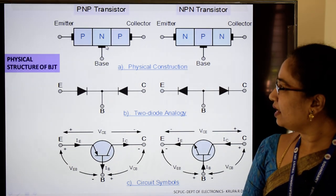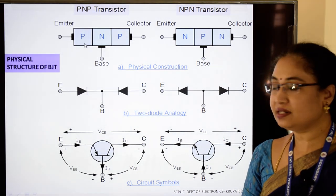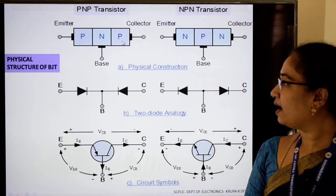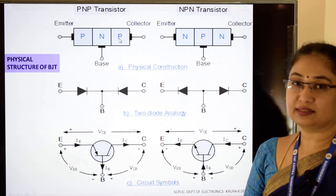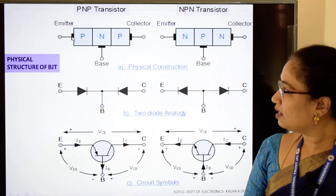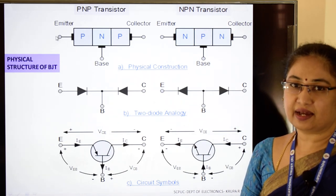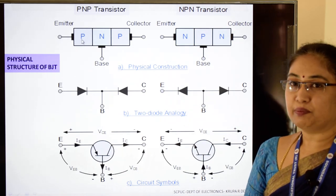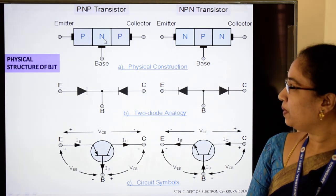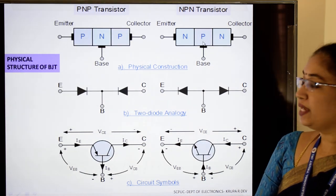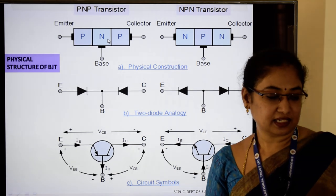There are three leads for connection. The first region is called the emitter region, the middle region is called the base, and the third layer is called the collector. Terminals are connected to these three layers for external connection. Between P and N in a PNP transistor, or N and P in an NPN transistor, there is a junction — as we have studied in semiconductor diodes.